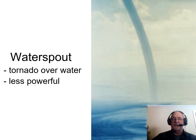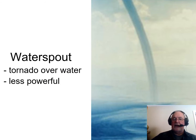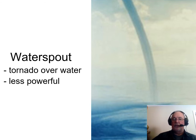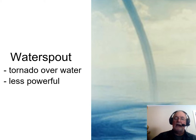Sometimes we get tornado-like features forming not on land but over water, especially off the coast of Florida, where very warm ocean waters create warm air above them. That can produce a mild version of a tornado forming over water — we call that a waterspout.